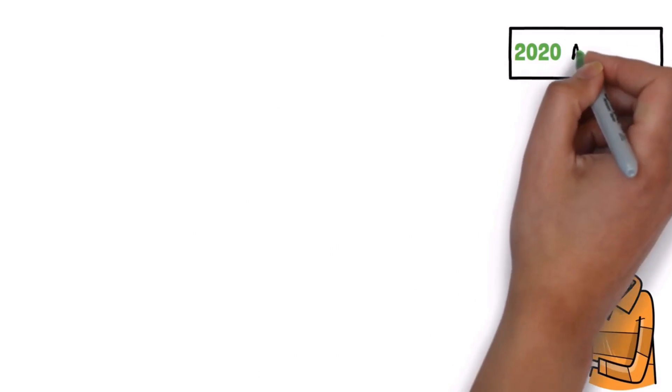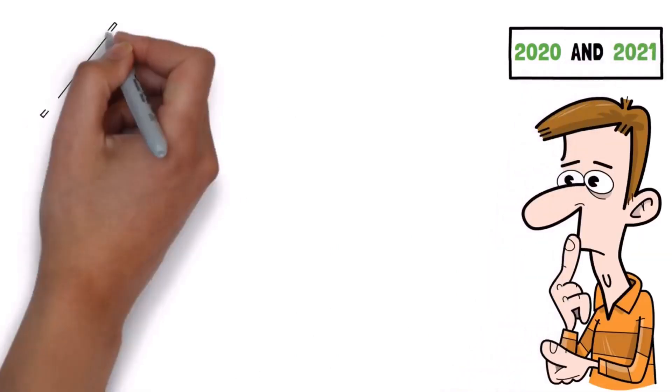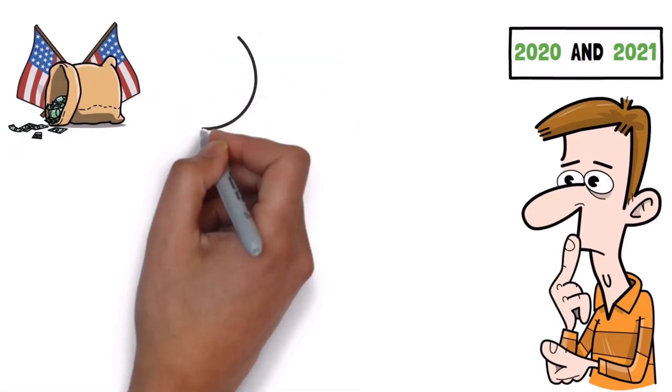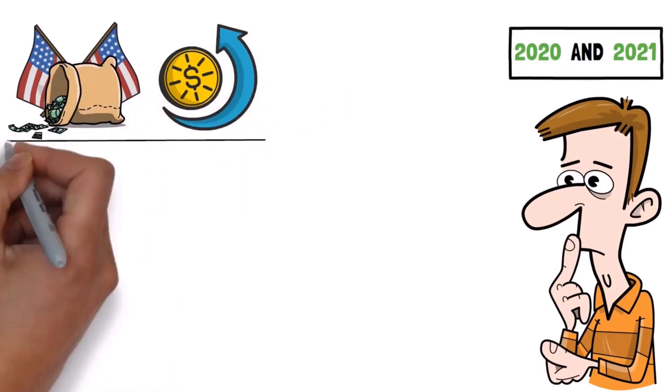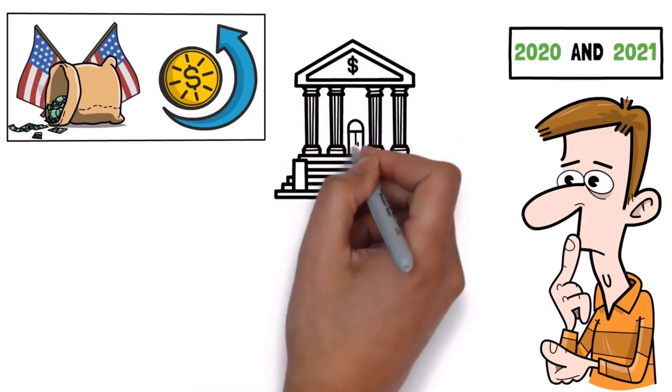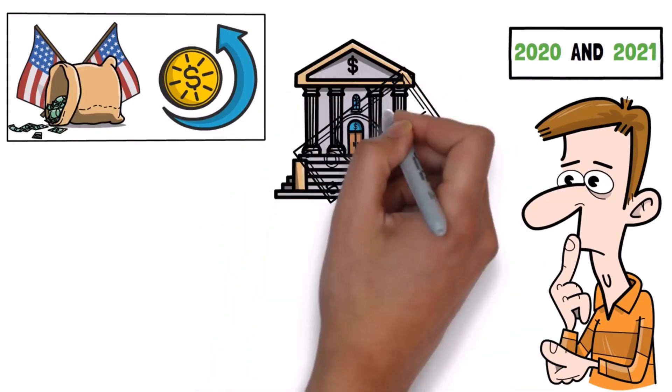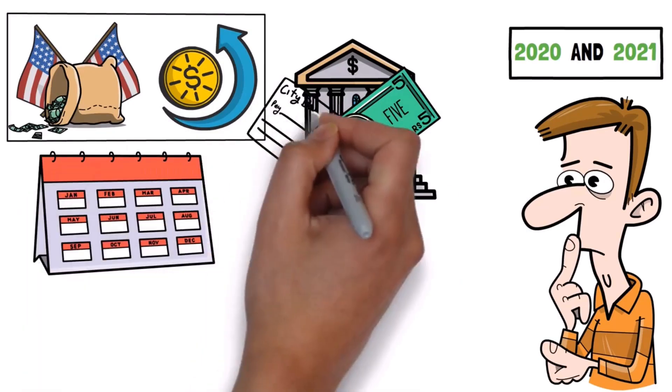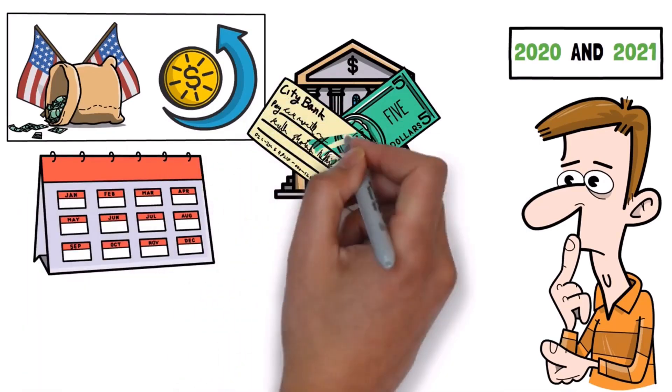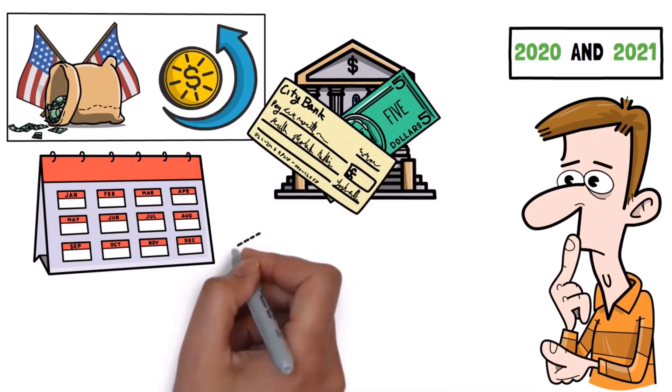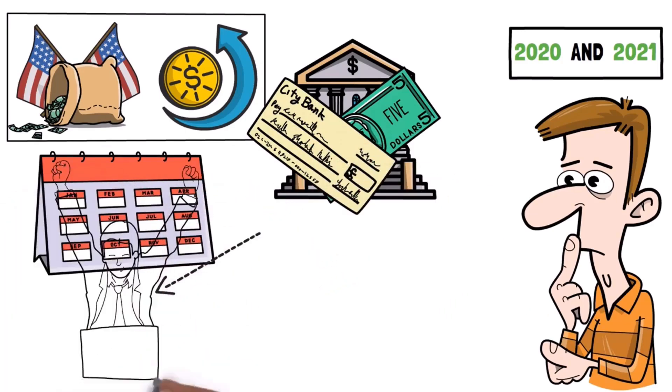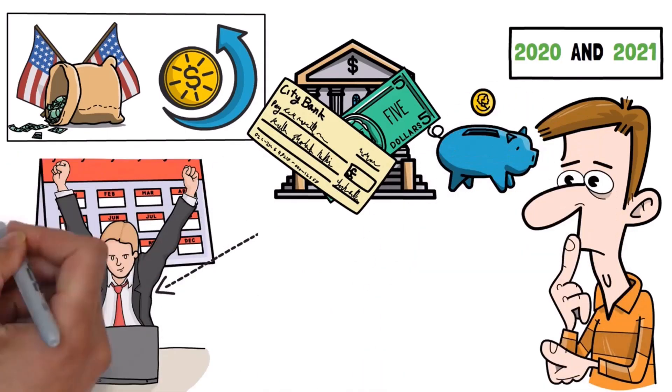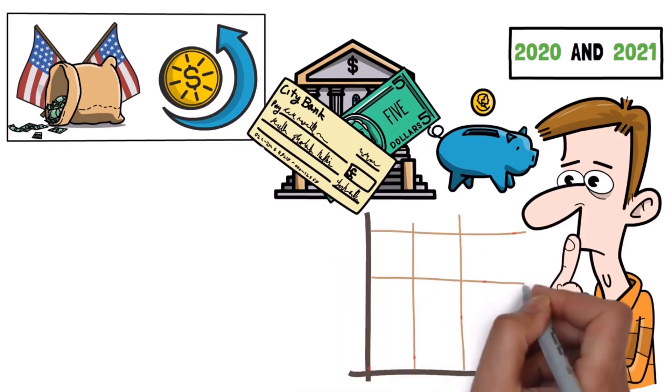Ray explains that in 2020 and 2021, the US government spent a lot more money than it earned. When this happens, the government borrows money to cover the gap. They do this by having the central bank create new money and buying government bonds. This is what happened over those two years, and it caused the Federal Reserve to own a lot more government bonds. A big chunk of this money went to regular people and businesses. If we check how much money people in the US are saving, we can see a big increase when the government provides economic help.